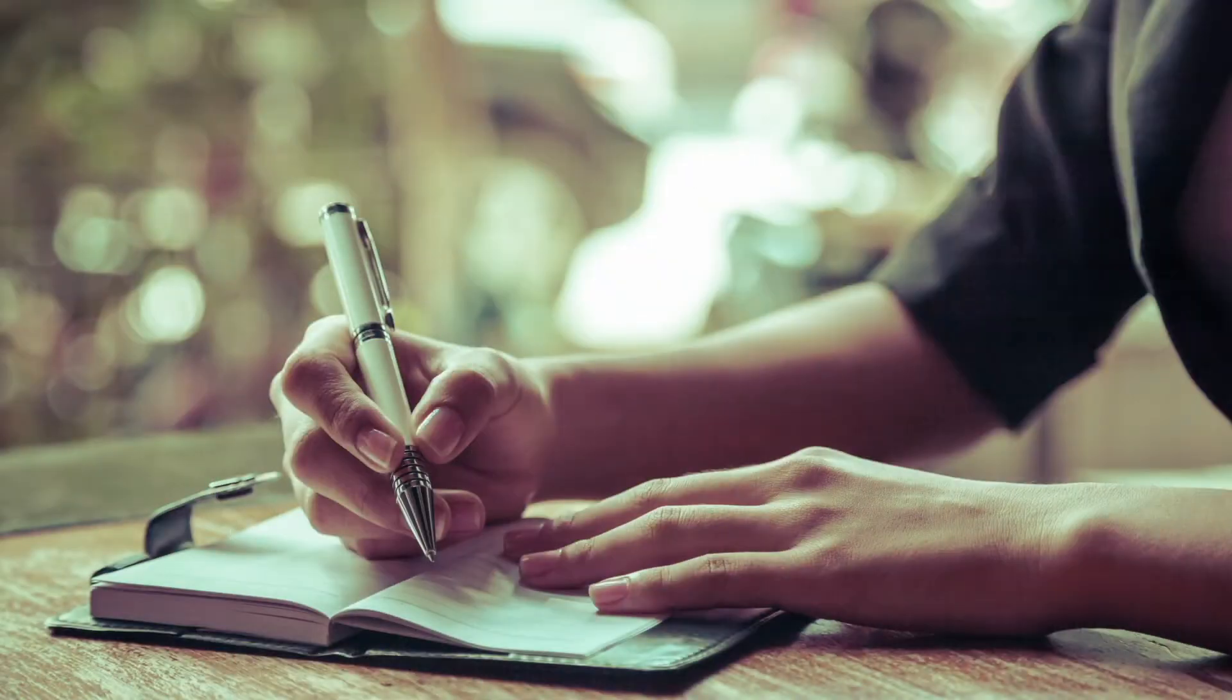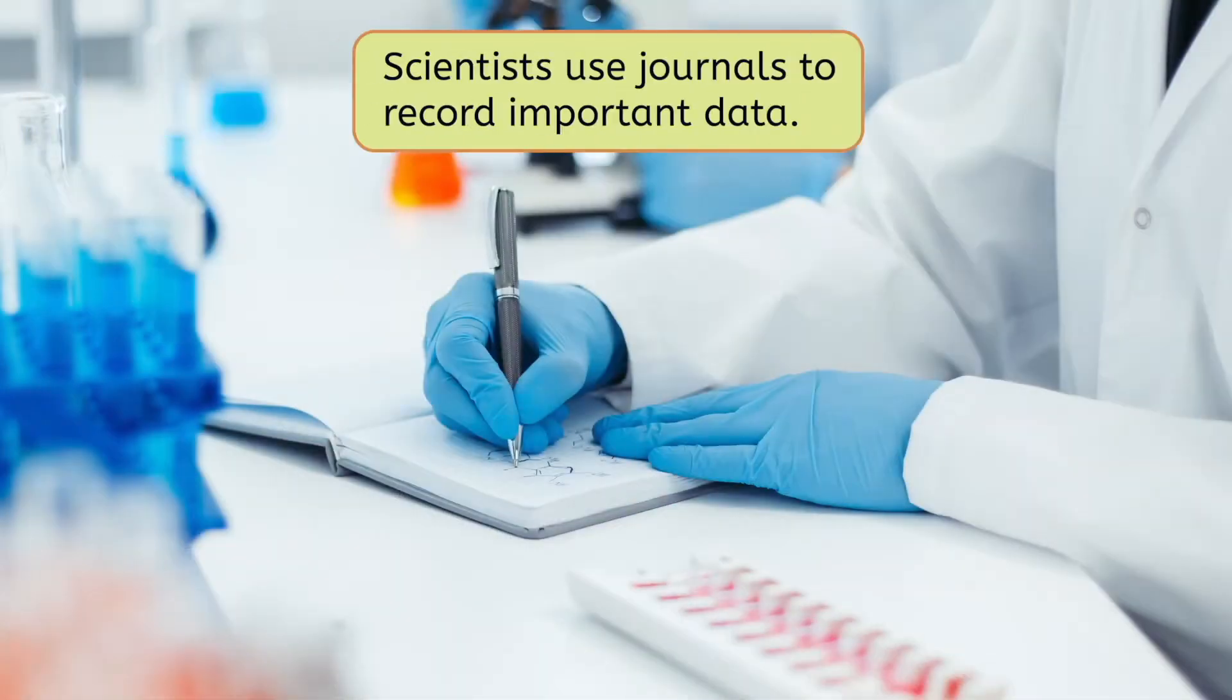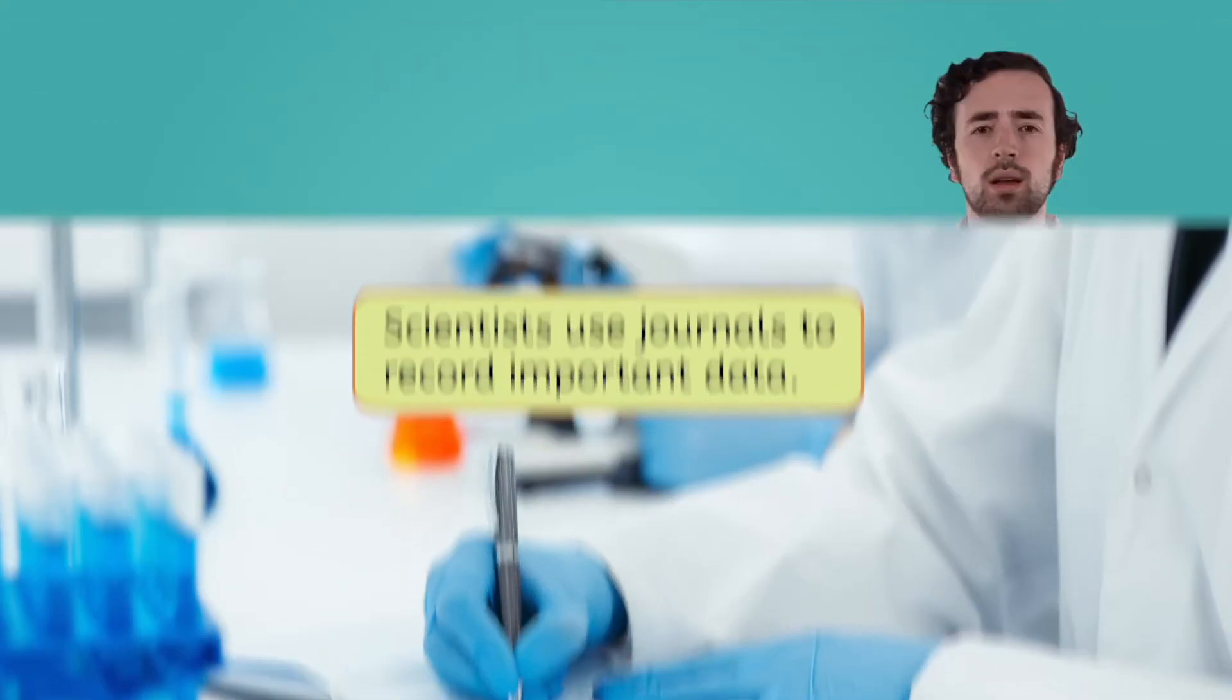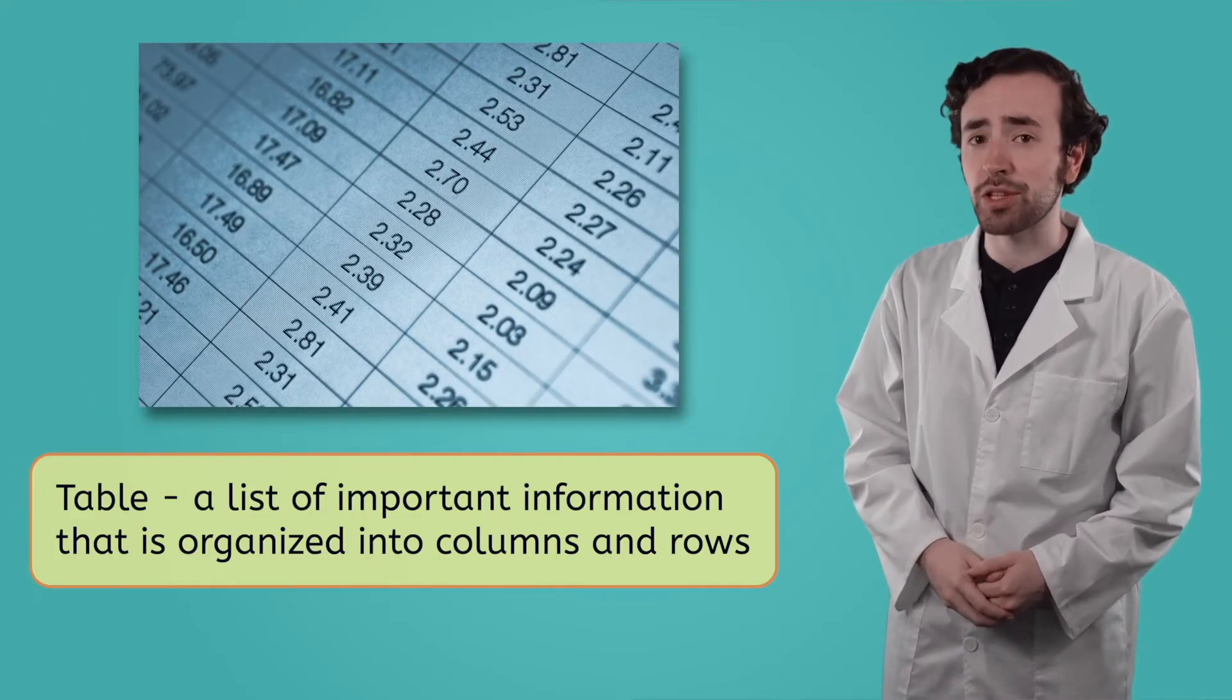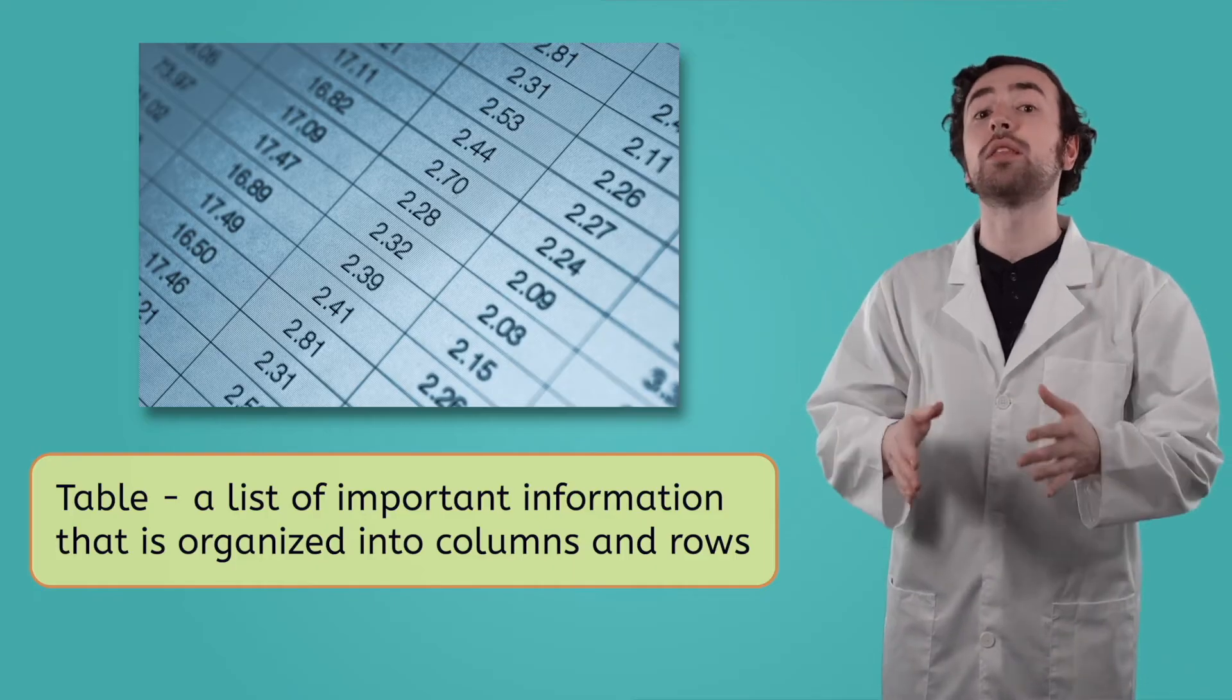Just like you might write in a diary or a journal to keep track of important events, scientists use journals to record important data. Now, what if I want to organize my data in a clear, easy-to-read format? For that, I would use a table. A table is a list of important information that is organized into columns and rows.